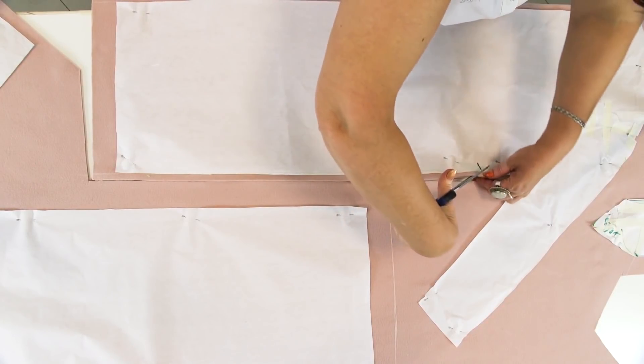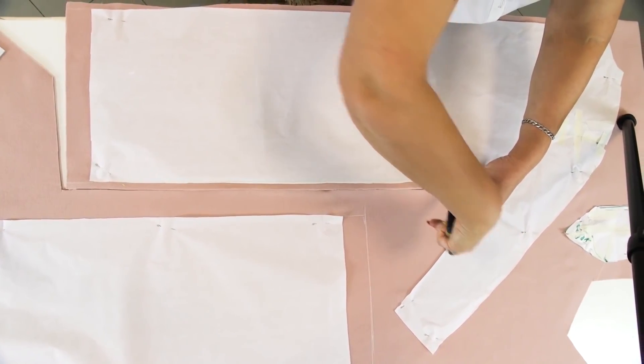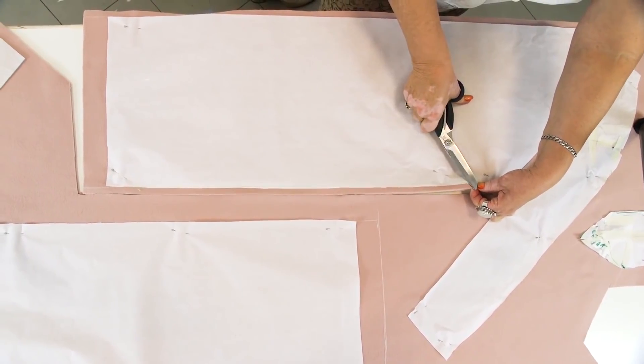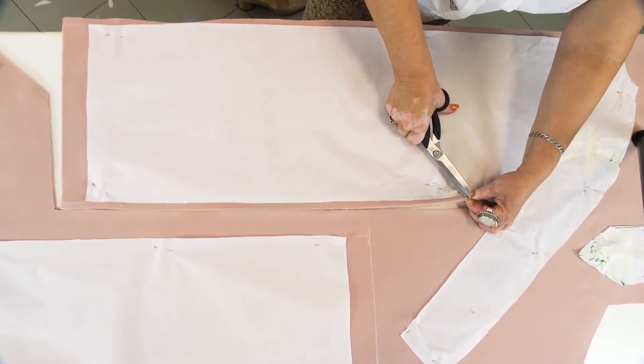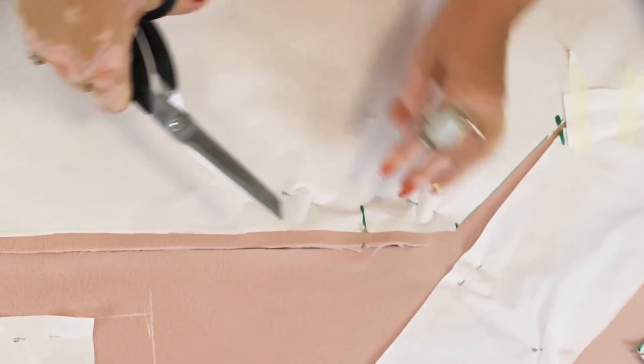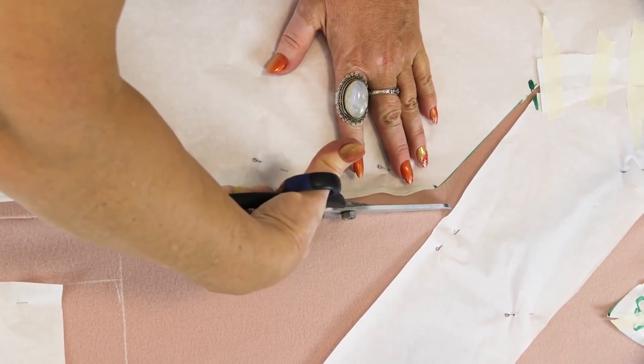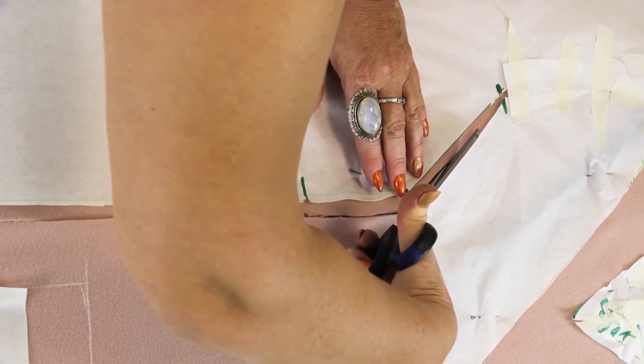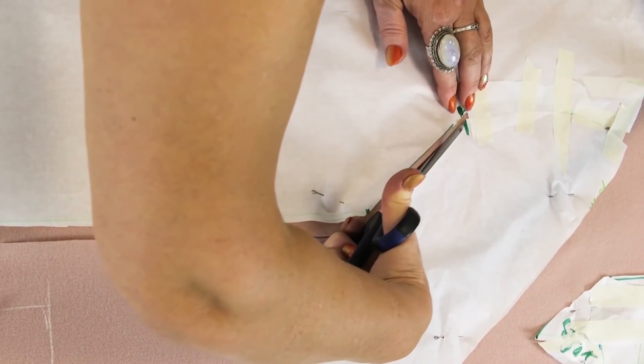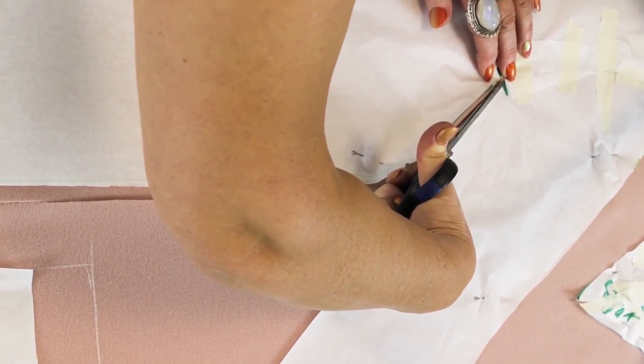Do not forget to make notches on the waistline. I'll show you what to do next. When you reach this point, just make a cut here. You don't need to make an opening. This cut will serve both as a seam and as a notch.